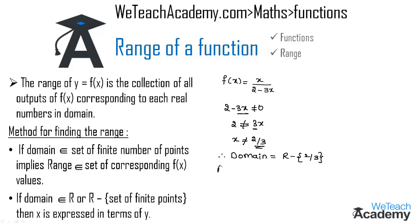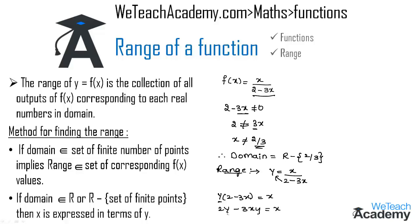Now let us find the range by expressing x in terms of y. Let y = x / (2 minus 3x). Cross multiplying gives y(2 minus 3x) = x, so 2y minus 3xy = x. Transferring minus 3xy to the right side: 2y = x + 3xy. Taking x as a common factor on the right: 2y = x(1 + 3y). Therefore x = 2y / (1 + 3y).